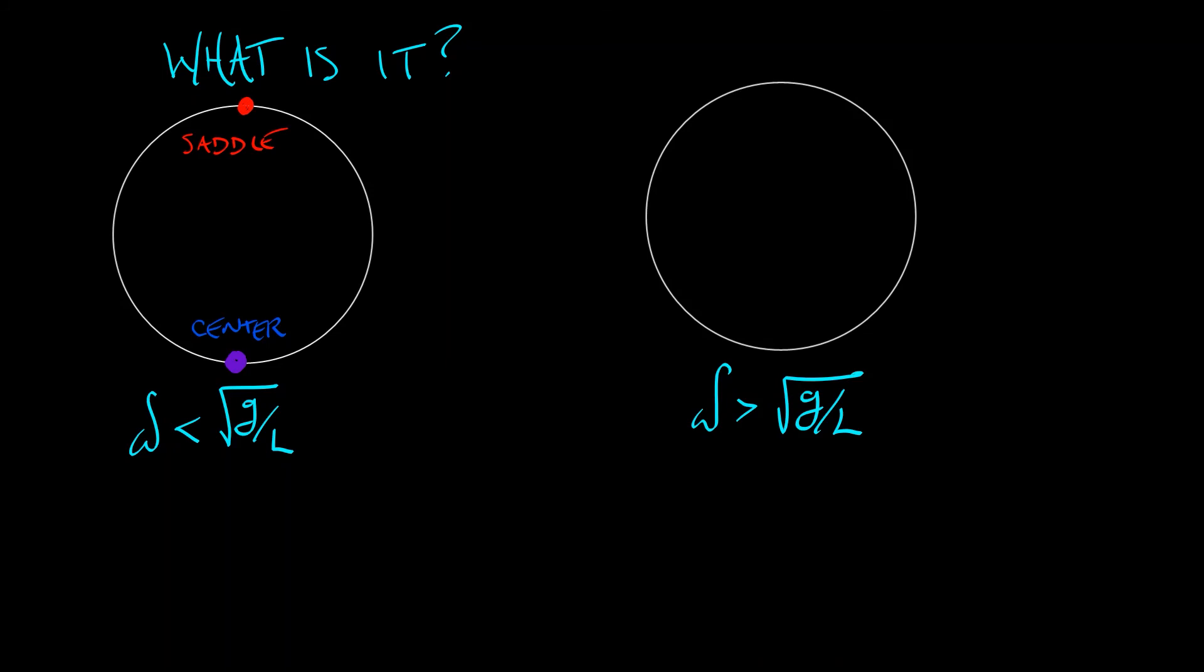On the other hand, when omega is sufficiently large, when it's bigger than root g over l, then that center at the bottom becomes a saddle. I still have the saddle at the top, but now I have an additional pair of equilibria, centers off to the left or the right. They branch out of that equilibrium at the bottom.